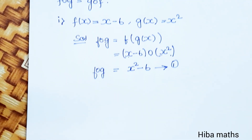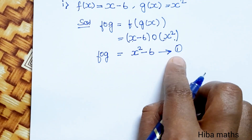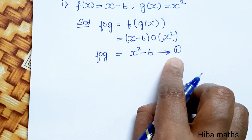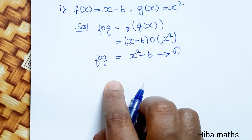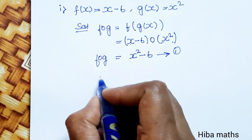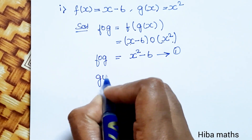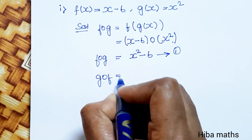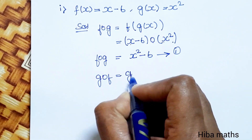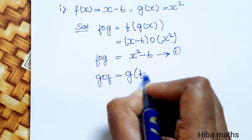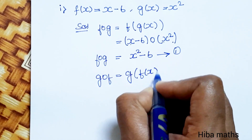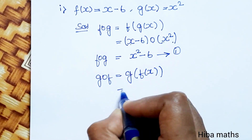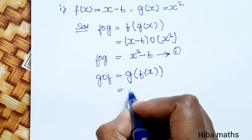Now we find g of f. g inside — f of x comes in. We need to find how this is done: in the g function, wherever x appears, substitute f of x, which is x minus 6.